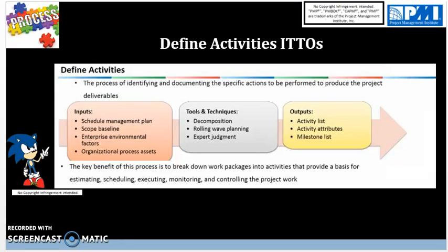The next input is OPAs, or Organizational Process Assets. These are formal or informal internal policies, procedures, lessons learned from previous projects, standardized processes, and activity list templates. Lessons learned is really important — it is the key word for distinguishing between EEF and OPA on the PMP exam. Simply put, EEFs are things outside of the project team's control, such as organizational culture, industry standards, or government regulations.